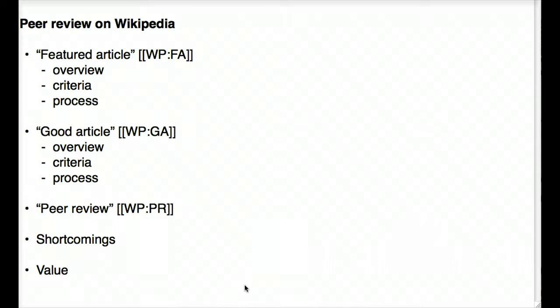That was a pretty thorough overview of the featured article process. Now I'm going to show you the good article process, and we're going to go through this a little more quickly. The good article status is something that has come about more recently than featured article in the Wikipedia processes.